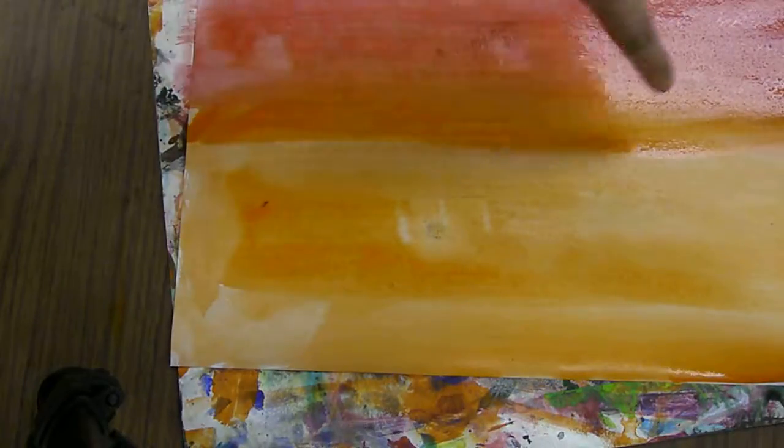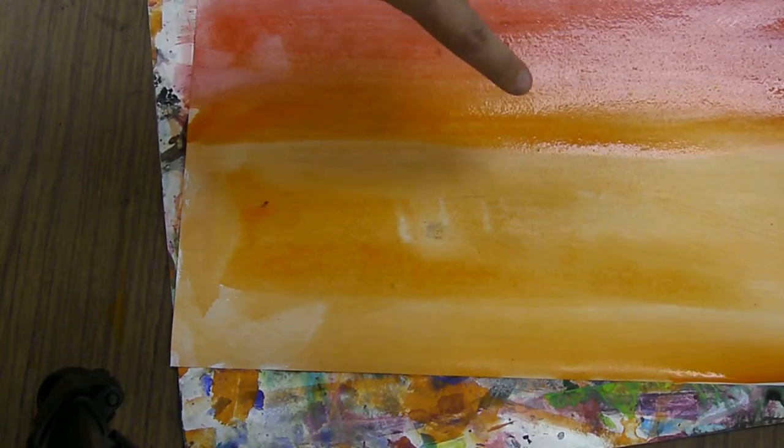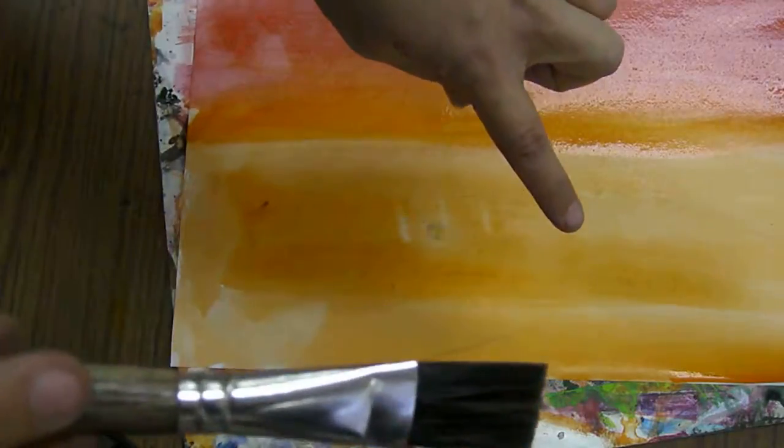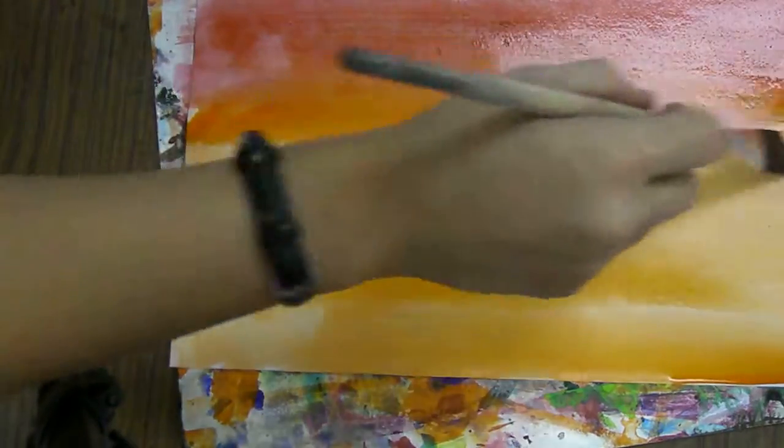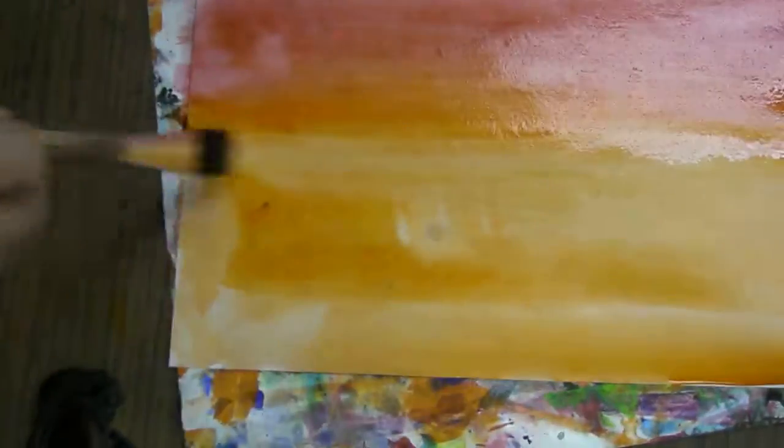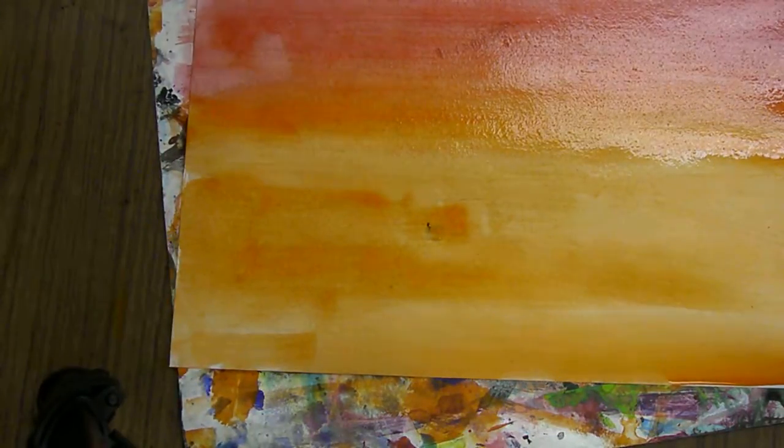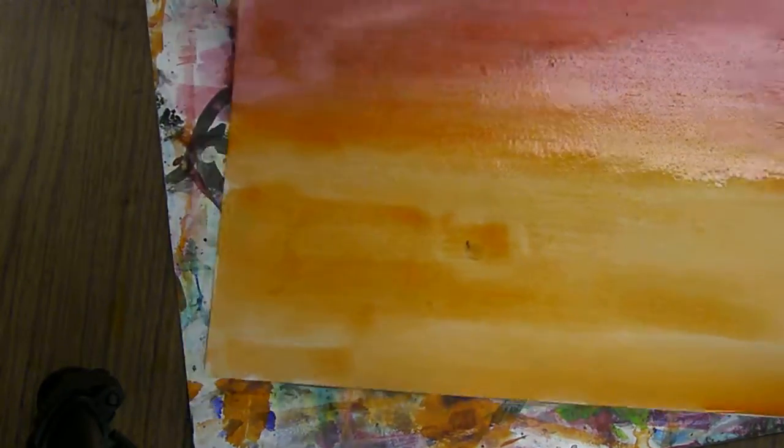Where it meets in the middle, I'm going to mix those together. I want to add a little bit more orange. If you're getting a harsh line, get a clean brush that's just slightly wet, and then go back and forth and smooth that out. Make some nice gradation. So that one's finished.